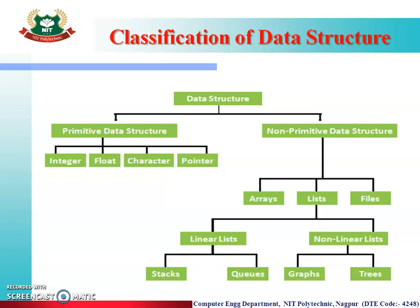Now, the classification of data structures. In the previous video, you have seen the classification of data structures. We will continue that. The classification of data structures has two types: one is primitive data structures, and the other one is non-primitive data structures. Primitive data structures have been classified into four categories.